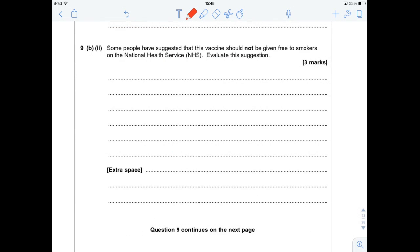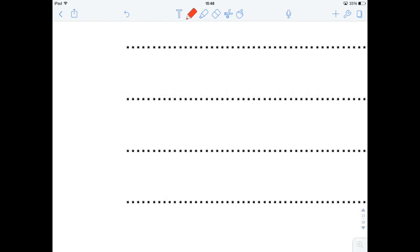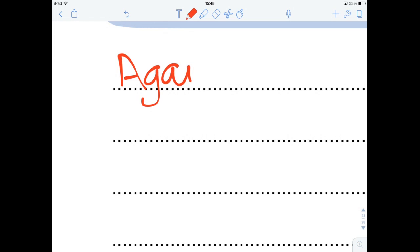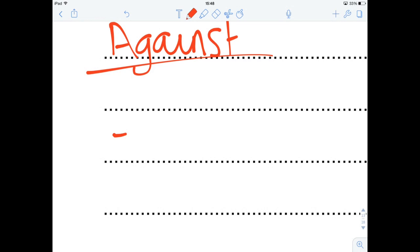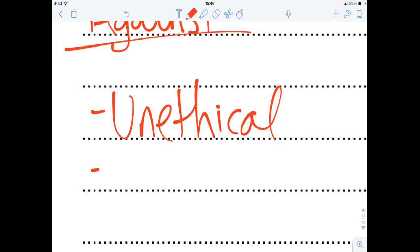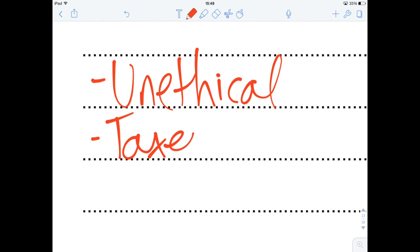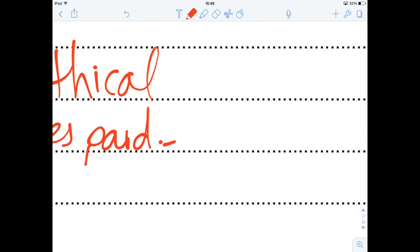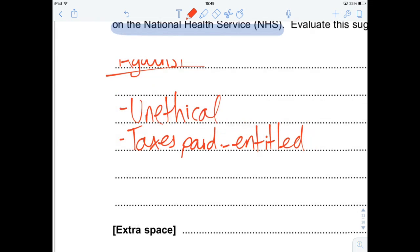Question 9B, part 2. Some people have suggested that the vaccine should not be given free to smokers on the National Health Service. Evaluate this suggestion. Well, going through. Let's disagree first. So, against. So, our disagreeing points. It's not really ethical, is it? You can't just choose not to treat people because of a lifestyle choice that they've made. So, that's terrible. Also, these people have been paying taxes all of their lives that help run the NHS. So, why shouldn't they have some treatment? Taxes paid, entitled to treatment. It's not really a biology question. It's a politics question.